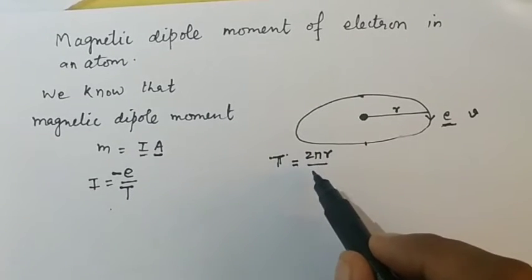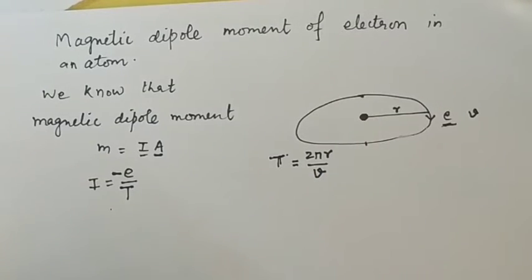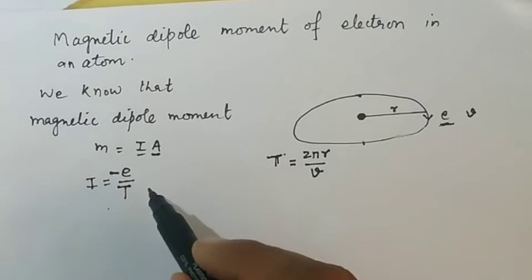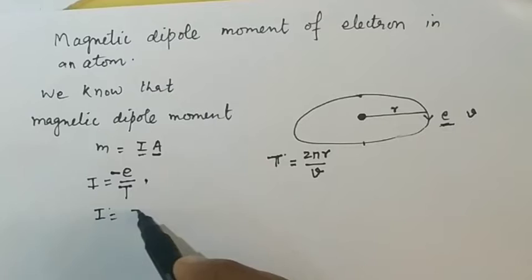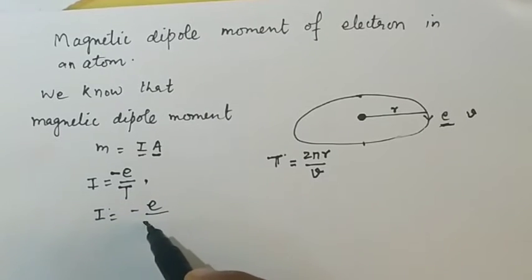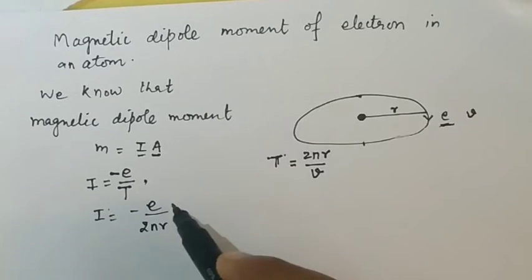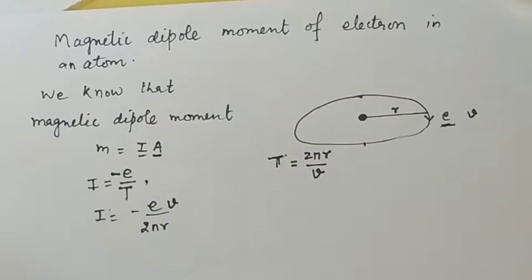This is your time period. Now put this value in the equation, so the current will be equal to minus e times V divided by 2πr.